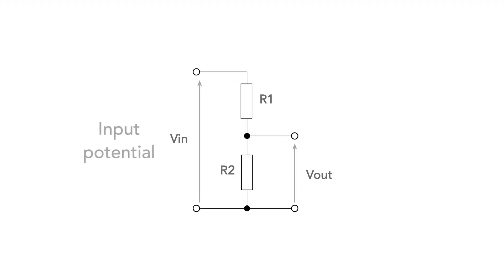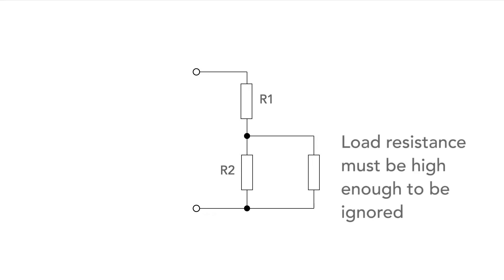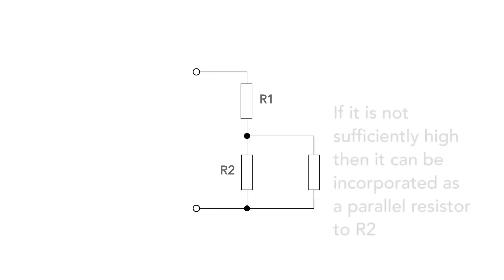However, this is only true if the load resistance for the circuit is sufficiently high that it can be ignored. Otherwise, the load can be incorporated as a parallel resistor with R2. Check out our video on parallel resistors to find out more details; these are in the description.